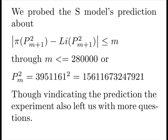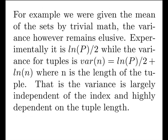We probed the S model's prediction about the error function, pi of x squared minus log integral of x squared. Well, in our model, through m equals 280,000. Now remember, we're measuring along the index. That translates to the prime, and then to the prime squared. So when we're finished, these numbers are very large, on the order of 10 to the 13. Though vindicating the prediction, the experiment also left us with more questions.